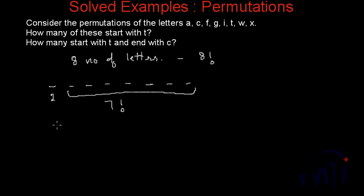So the number of words possible which will start from T will actually be one, which is the number of choices for this place, multiplied by seven factorial, which is the number of permutations for the remaining places. And this will be equal to seven factorial.